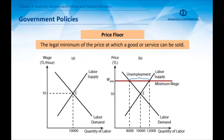Governments may also intervene in markets using price floors. The most obvious example of this is the minimum wage. Governments set a minimum wage level in order to provide acceptable social welfare, but this is an intervention on the market, and interventions cause markets to become inefficient.